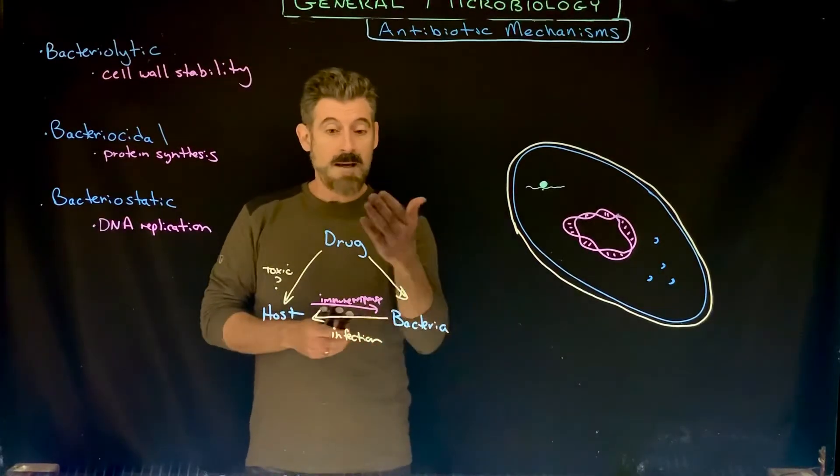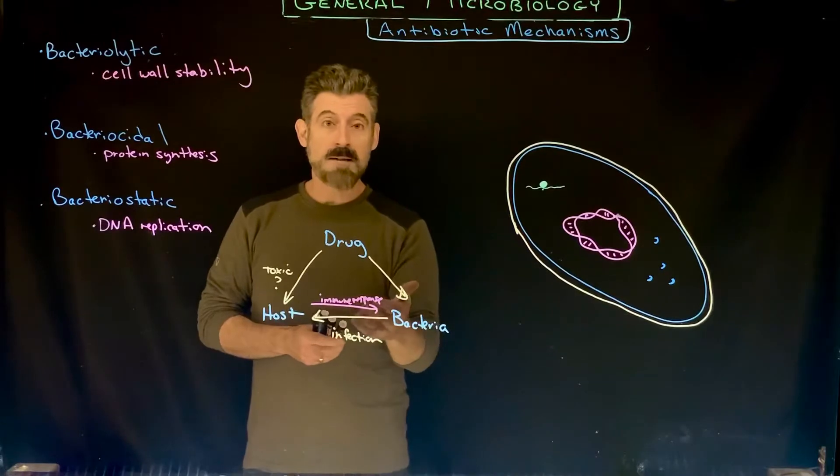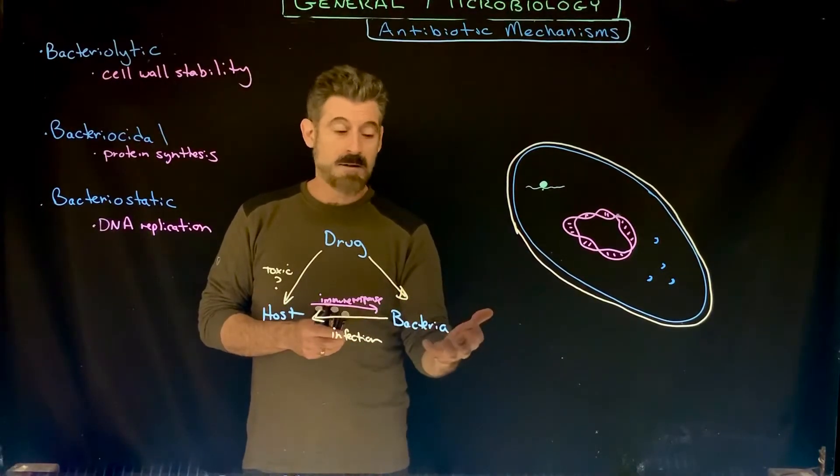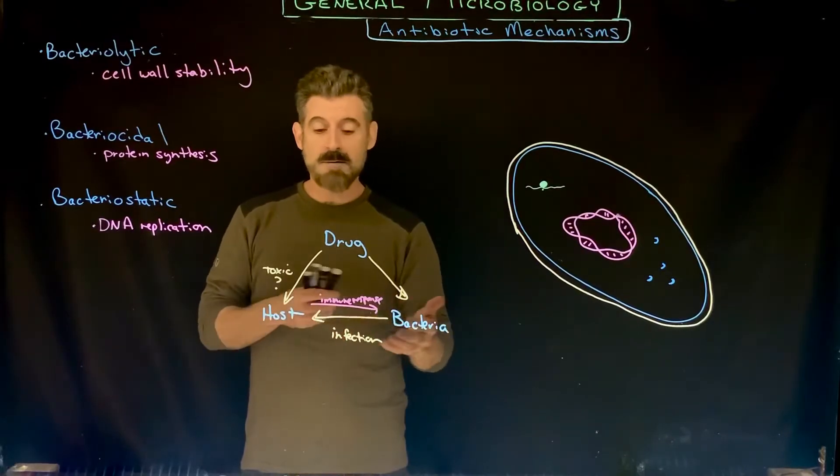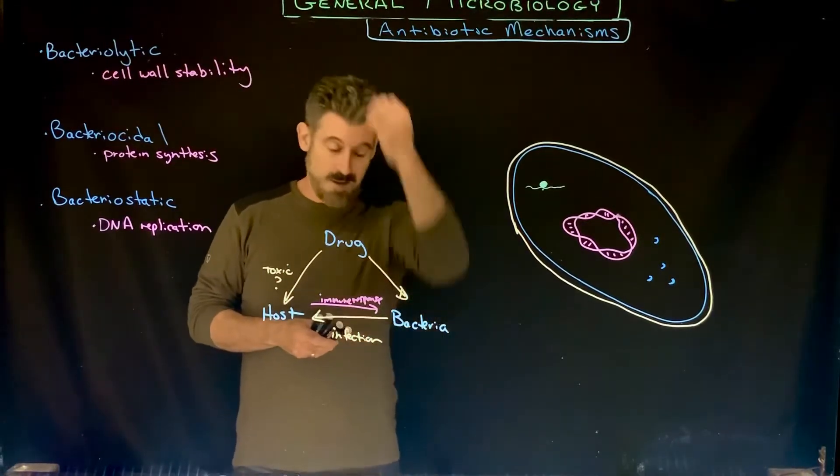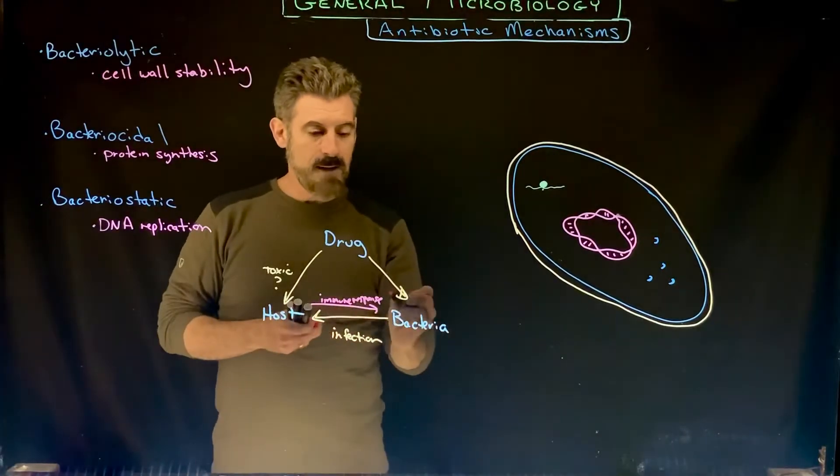We produce a number of antimicrobial peptides. We have our own microbiome that can be combating the infectious bacteria as well. The drug might be affecting our microbiome cells the same as the pathogen, which means we might be knocking out cells that are normally there to help us.